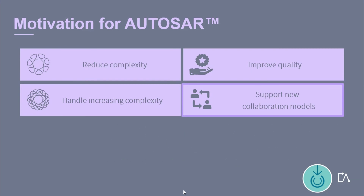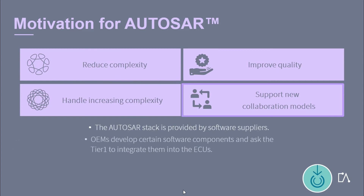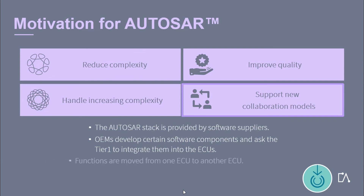Typical use cases are: the AUTOSAR stack is provided by software suppliers; OEMs and Tier 1 work together in different ways — for example, OEMs develop certain software components and ask the Tier 1 to integrate them into the ECUs; and functions are moved from one ECU to another ECU.